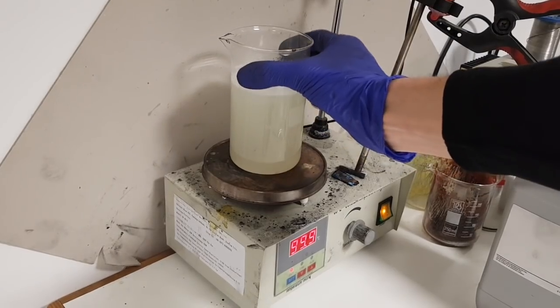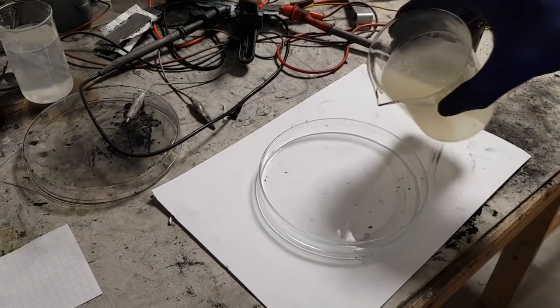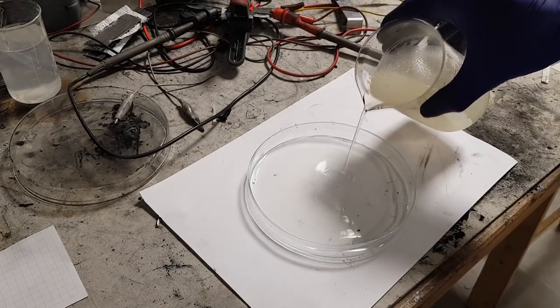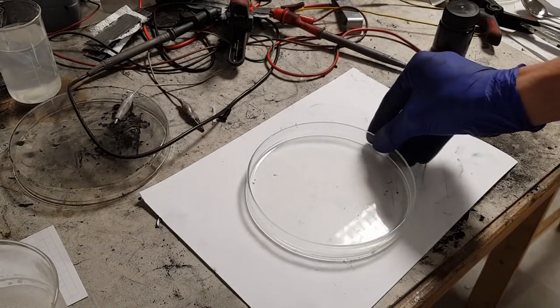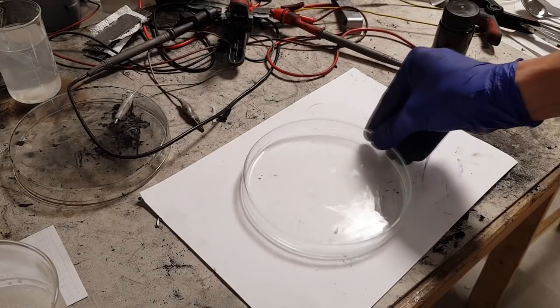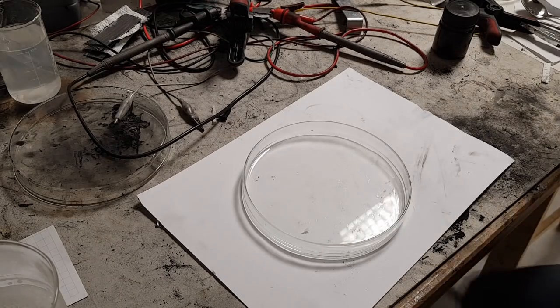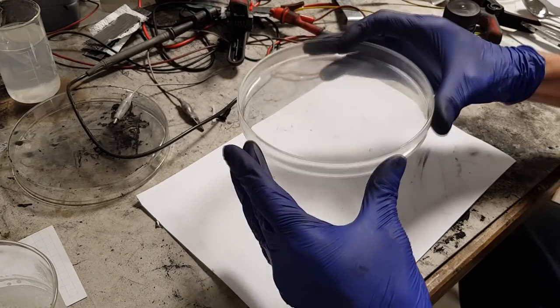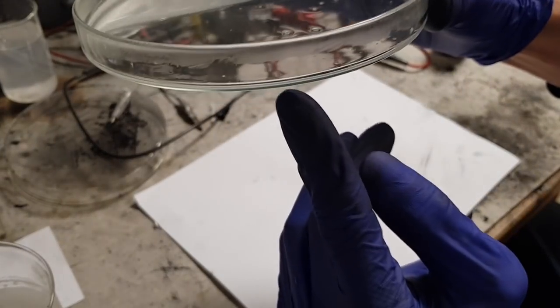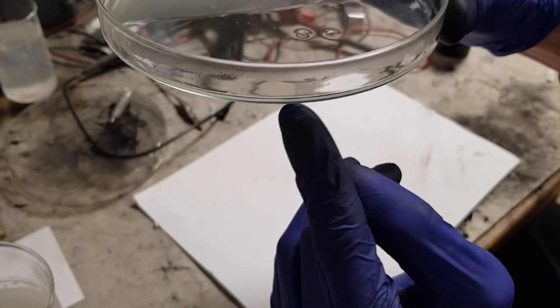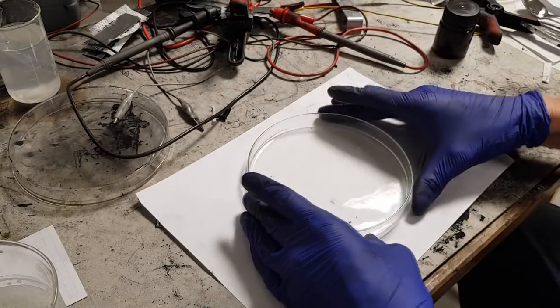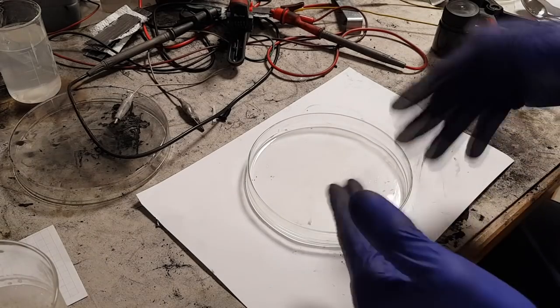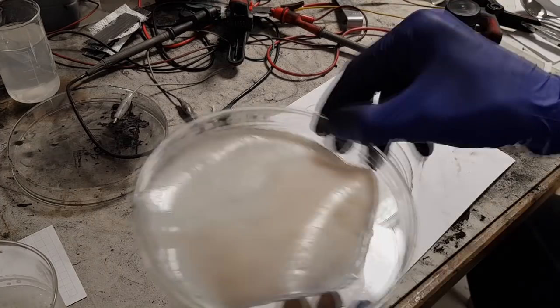And now, you need to put this mix in something like this. So I will make a really tiny separator. And now, you need to leave it like this so that the separator, I mean the electrolyte, will be in solid state like this one.